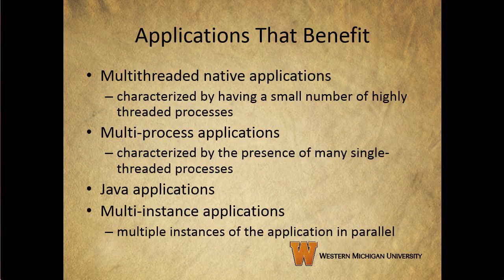Applications that benefit from multi-core and multi-threaded approaches include: multi-threaded native applications, characterized by having a small number of highly-threaded processes; multiprocess applications, characterized by the presence of many single-threaded processes; Java applications, which embrace threading in a very fundamental way — the Java language greatly facilitates multi-threaded applications and the Java Virtual Machine is a multi-threaded process that provides scheduling and memory management for Java applications; and finally, multi-instance applications, where multiple instances of the application itself run in parallel.